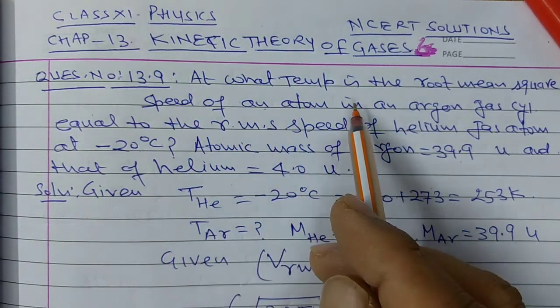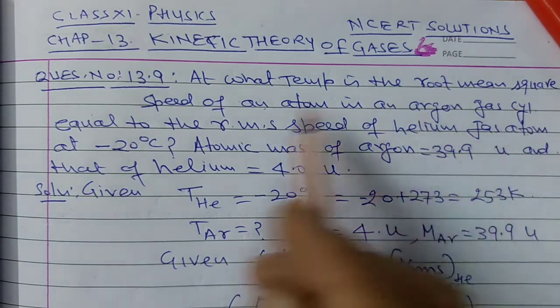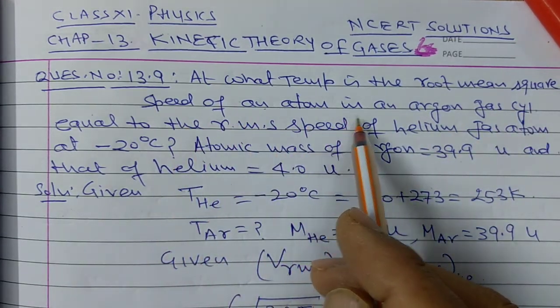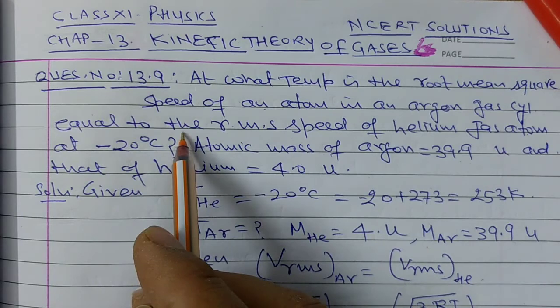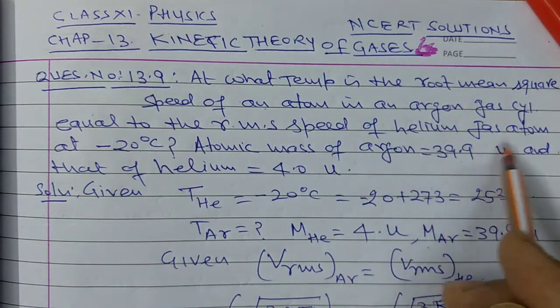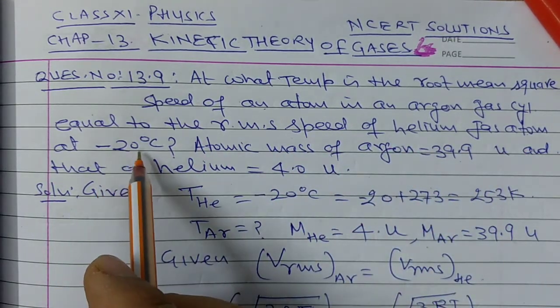Question Number 9: At what temperature is the root mean square speed of an atom in an argon gas cylinder equal to the RMS speed of a helium gas atom at minus 20 degrees Celsius?